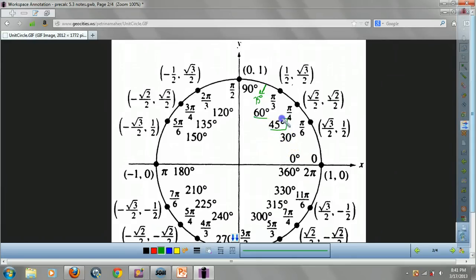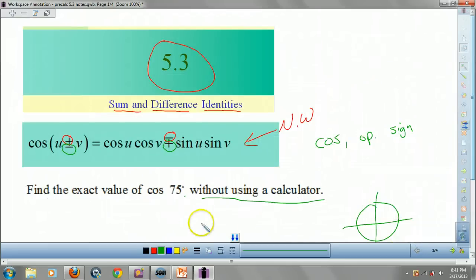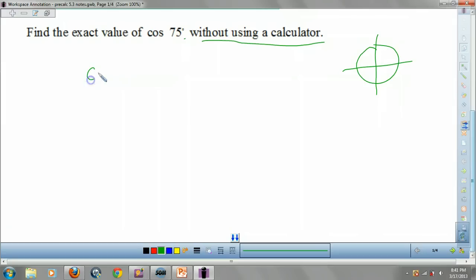If I have a 45, what's 45 plus 30, guys? That equals my 75. So I can rewrite this as cosine of 45 plus 30. Because 45 plus 30 is 75.